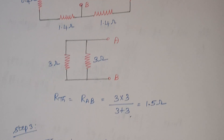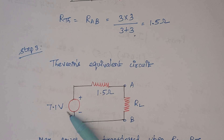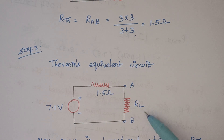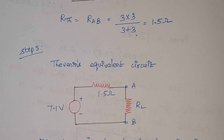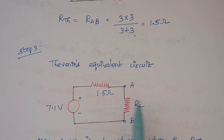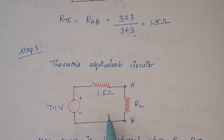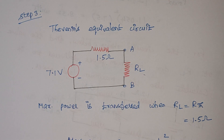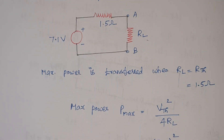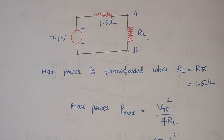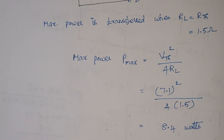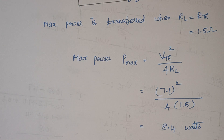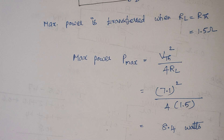Now we have calculated Thevenin's voltage and Thevenin's resistance. We are going to draw Thevenin's equivalent circuit. This is our Thevenin's voltage, this is our Thevenin's resistance, and this is your load resistance RL. Maximum power transfer will happen only when RL is equal to this source resistance. So the value of RL is equal to 1.5 ohms. The maximum power formula is V_Thevenin squared divided by 4RL. Just substitute the values accordingly and the final answer is 8.4 watts. When the value of RL is 1.5 ohms, the maximum power transferred to the load is 8.4 watts. Here comes the end of this video. If you have any doubt, let me know in the comment section. Thank you.